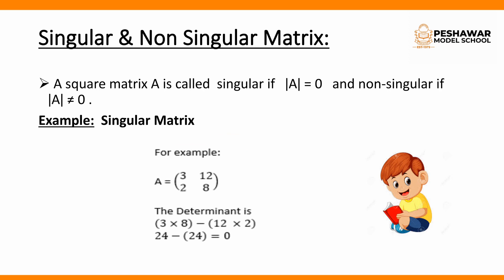Let's explain with an example. Suppose we have a square matrix A equal to [3, 12; 2, 8]. We first find the determinant of A. If the answer is 0, the matrix is singular; if not, it is non-singular. As we can see, the determinant of this matrix equals 0, so it is a singular matrix.